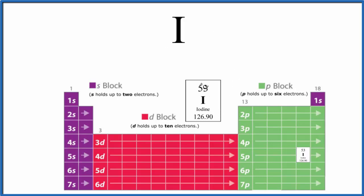So with neutral iodine, or any neutral element on the periodic table, the atomic number here, that's the number of protons, that'll equal the number of electrons. That's why it's neutral.